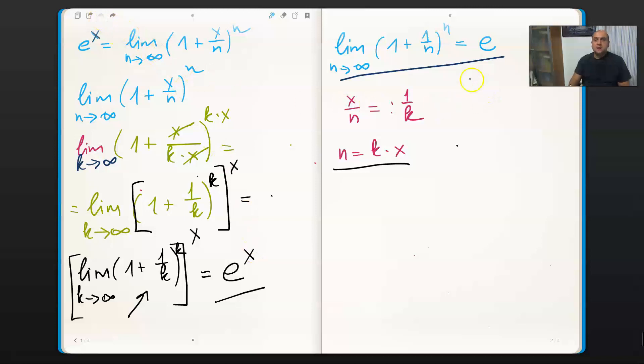We previously discussed that this limit exists and it makes sense. Now we just consider the same limit that we would like to start with, but we make a substitution and we define x divided by n as 1 divided by k, which means n would be k times x as you can see it right here.